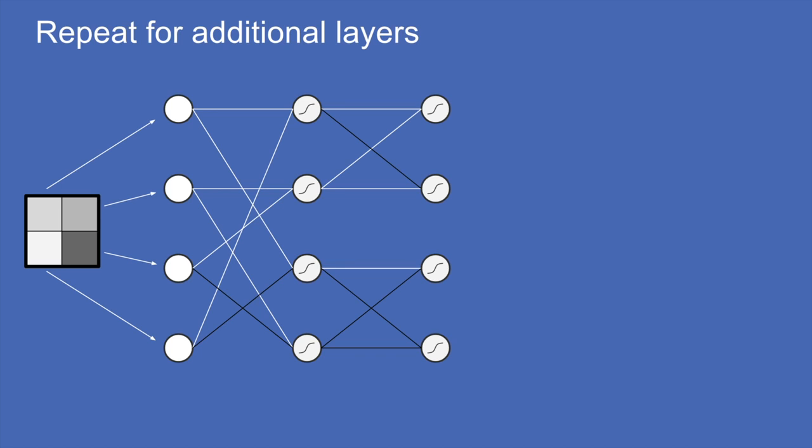Because we were careful about how we created that first layer, its values look a lot like input values, and we can turn right around and create another layer on top of it in exactly the same way — the output of one layer being the input to the next. We can repeat this three times, seven times, or seven hundred times for additional layers.